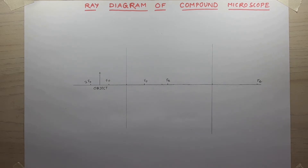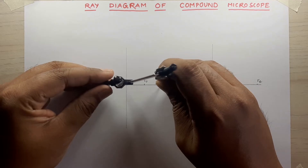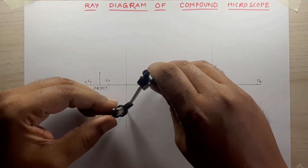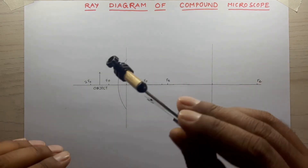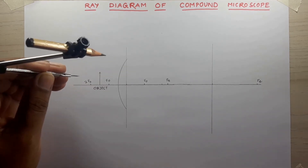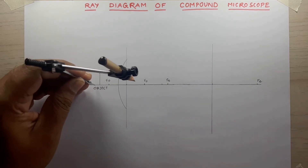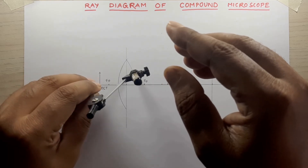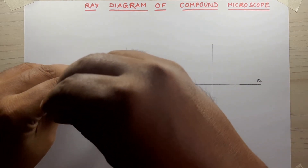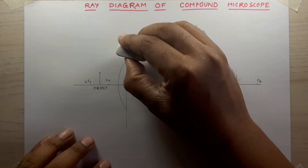Now I will create the lens. To draw the lens I will use a compass. Always remember two things for the objective lens: one is the object will be between 2f and f, and this lens is thicker or has more power than the eyepiece lens. You can draw this arc from the 2f point. I will just remove the extra part and now my lens is complete.